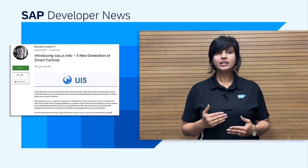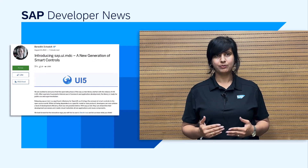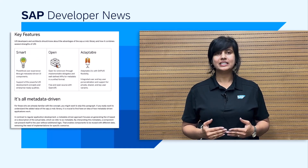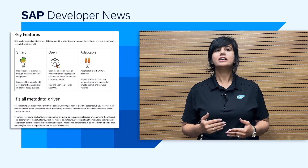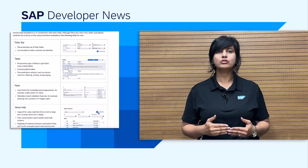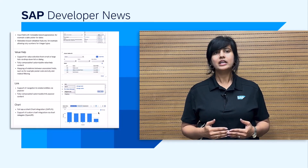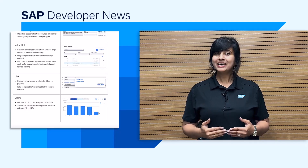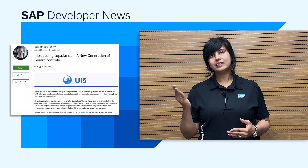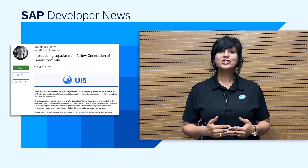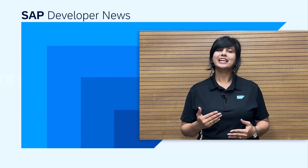Number two, the sap.ui.ndc — the smart controls library — has gone public into OpenUI5. The NDC stands for metadata-driven controls. This library has a special set of smart controls. These controls interpret the metadata from the underlying service irrespective of its data protocol, like OData V2 or V4. These are very powerful and save significant app development time. Benedict has explained about the library in this blog post. Do give it a shot and develop metadata-driven applications. Let us know what you think about these new updates in the comments below.